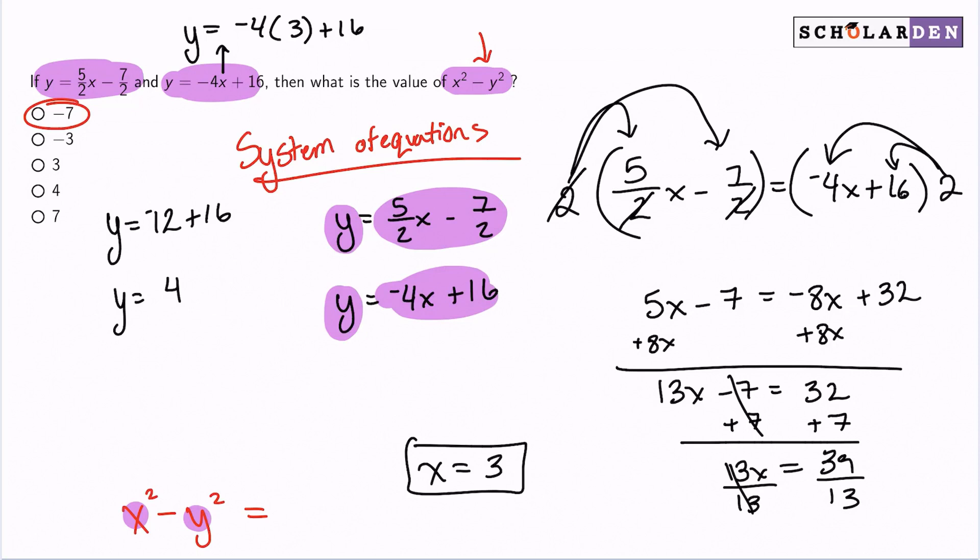From there, we have x, we have y. We're good to go. So my answer for x squared minus y squared will be 3 squared minus 4 squared, which translates to 9 minus 16, which equals negative 7.